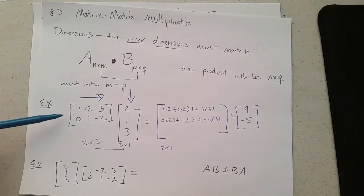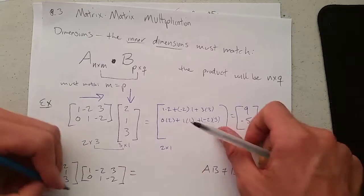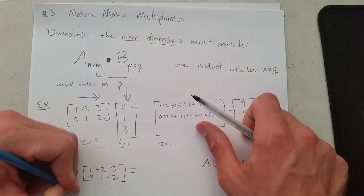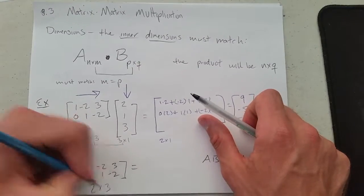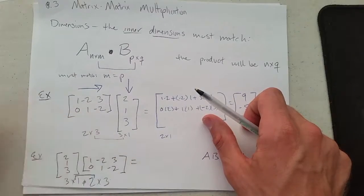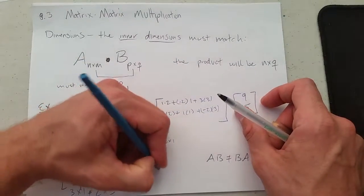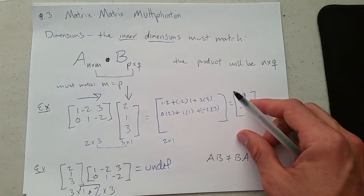Let's try to multiply these in the other direction. We have two, one, three times this matrix. Writing their dimensions out: this has three rows, one column. This one has two rows, three columns. The inner dimensions are not equal, so we cannot multiply. We can write undefined. We're not even allowed to multiply these two matrices together.